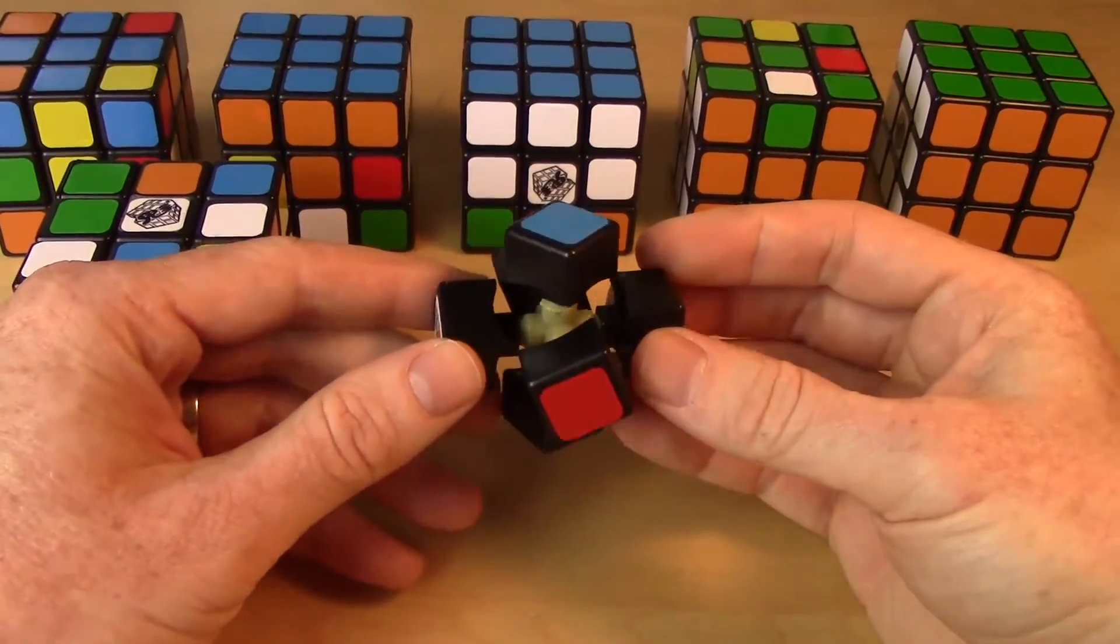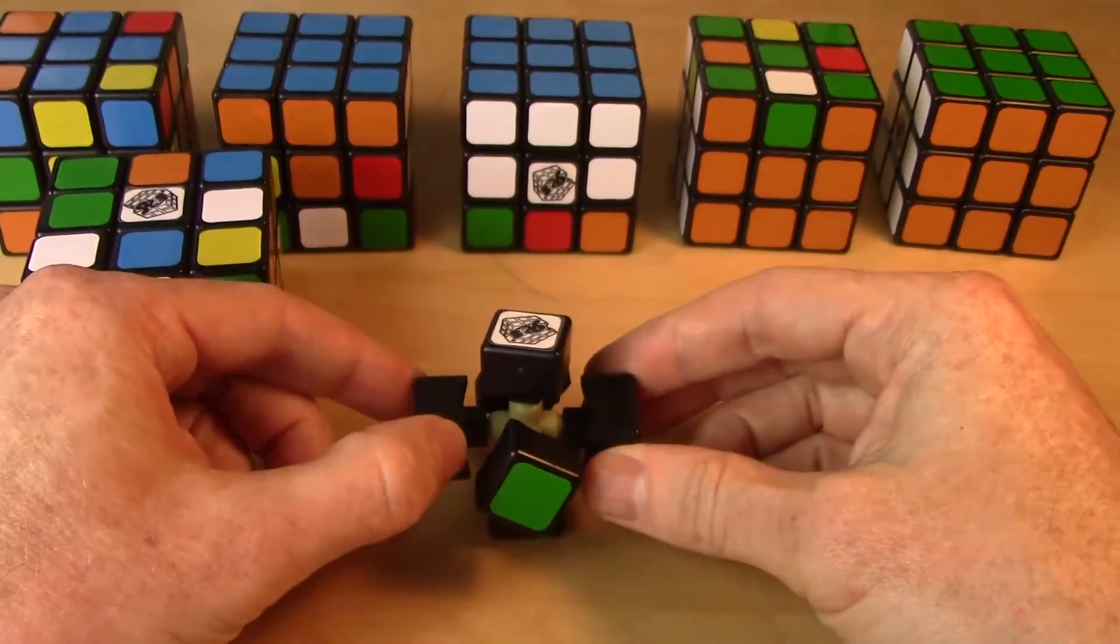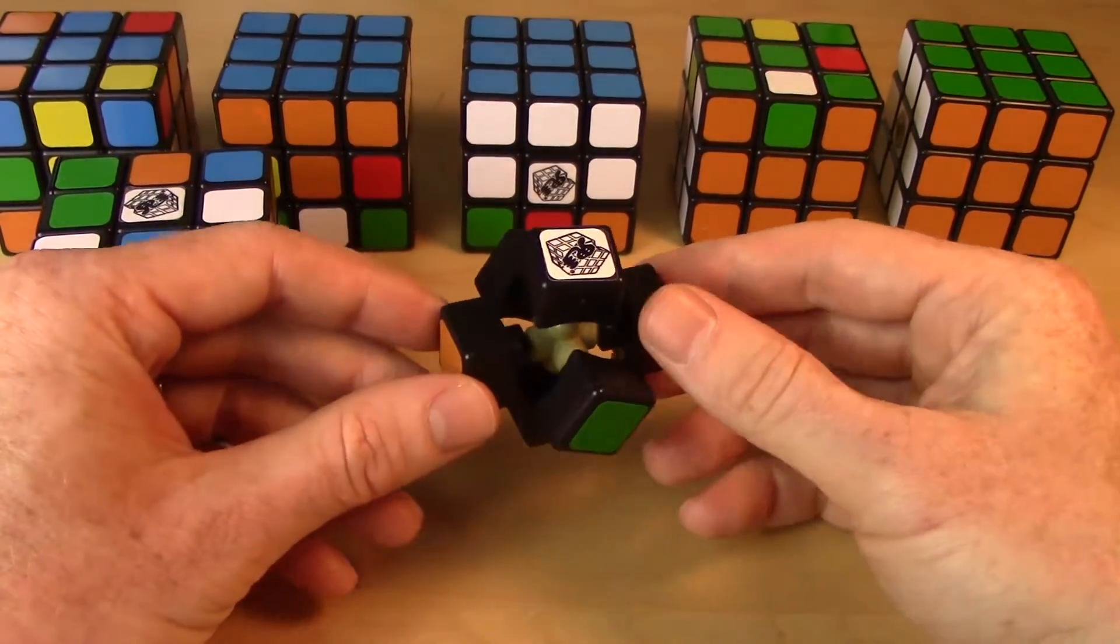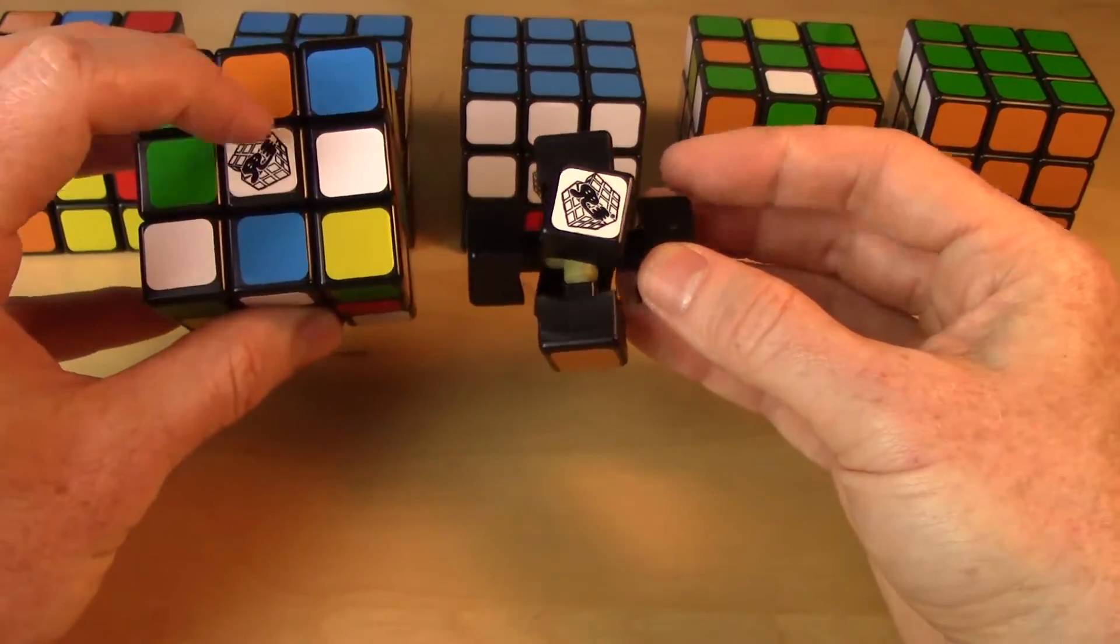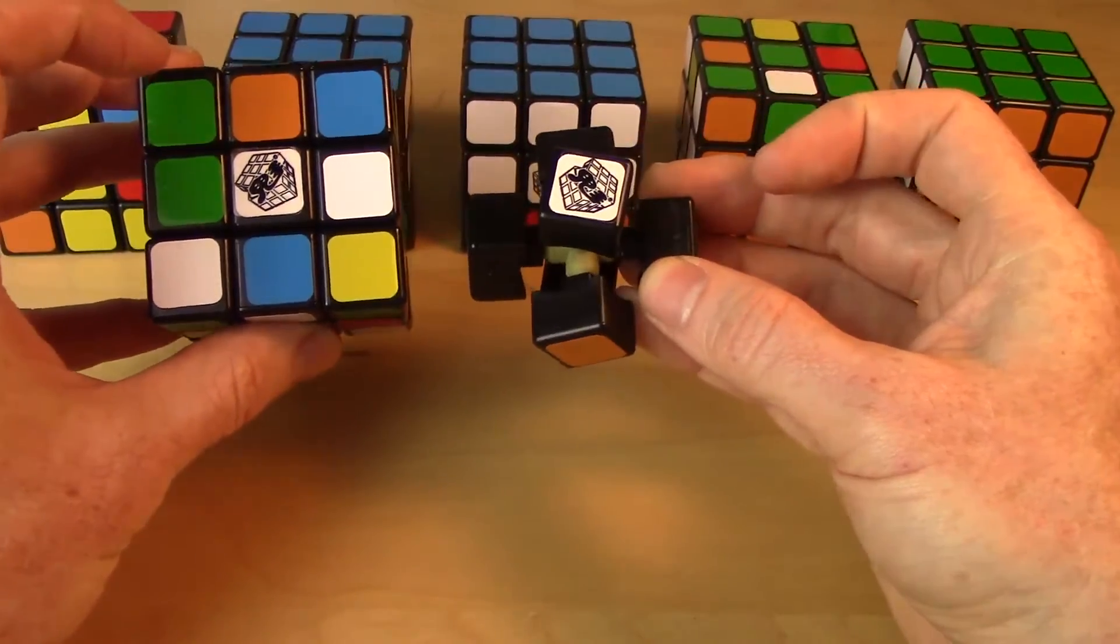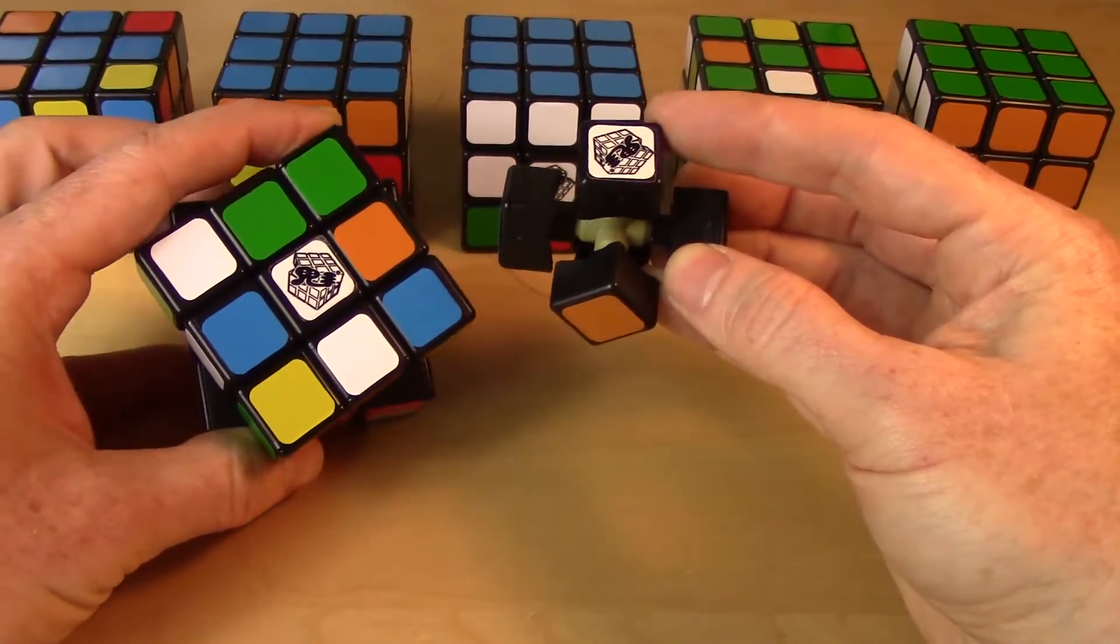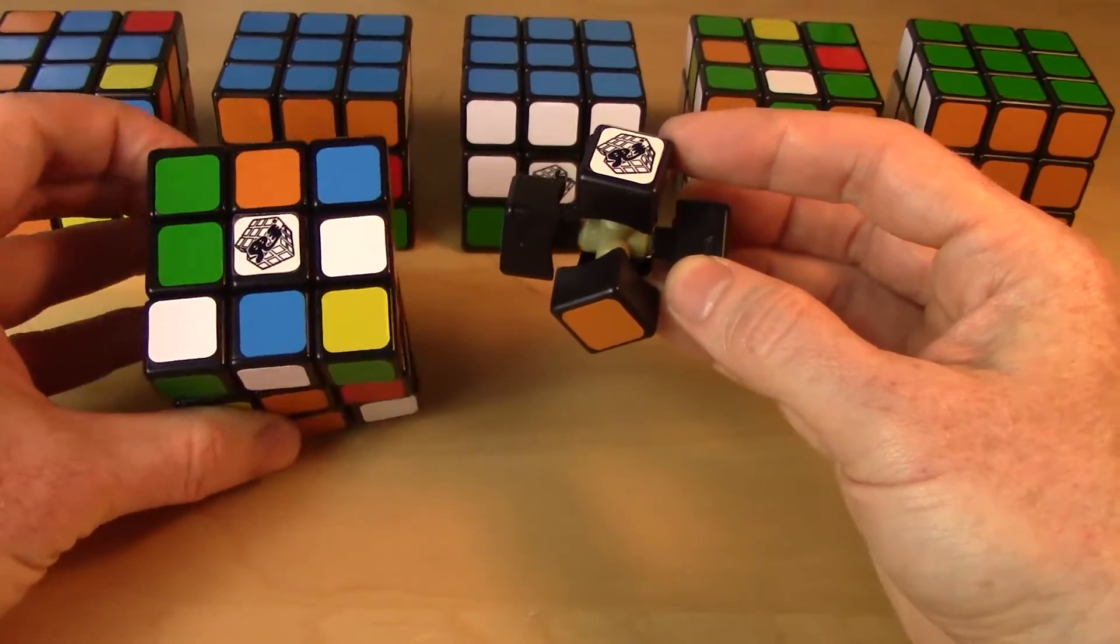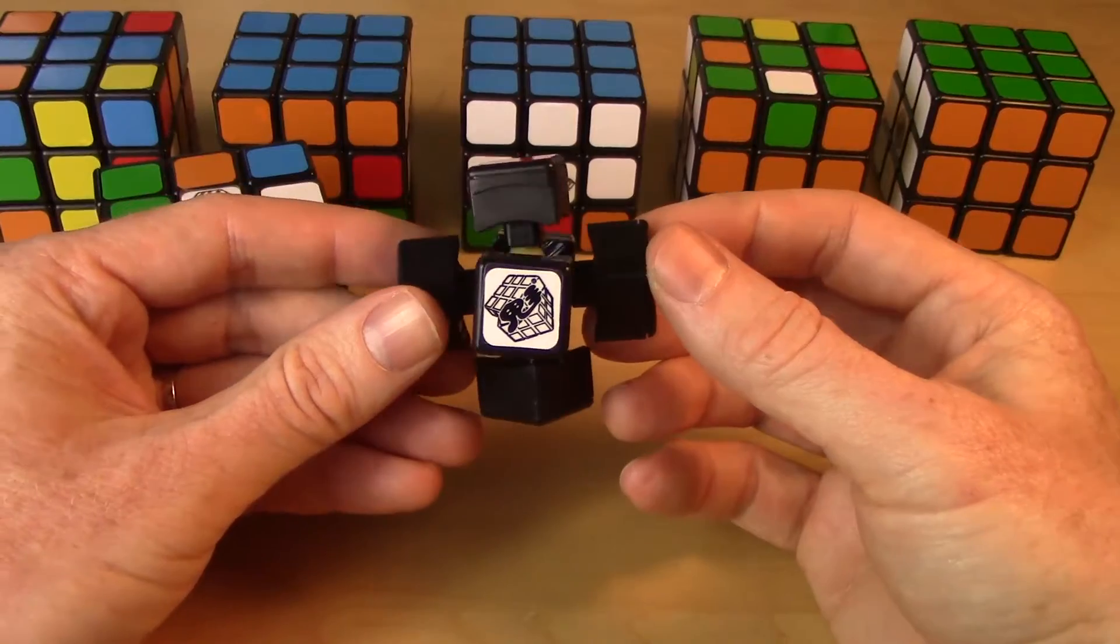The first obvious piece is this one with all six center pieces attached to it. This is the central core structure, this is what holds the entire cube together. You can see this is the center piece that is stuck to that central core. When you rotate a face, you're really rotating that center piece.